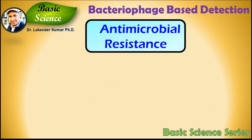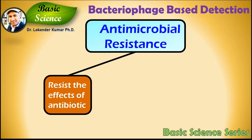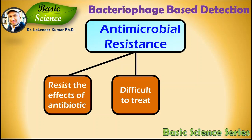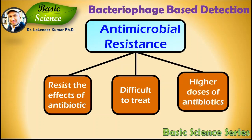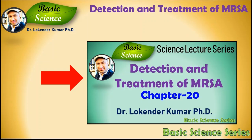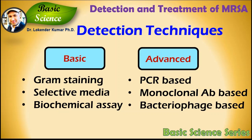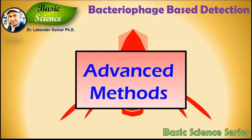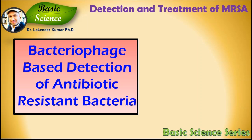Antimicrobial resistance is the ability of a microbe to resist the effect of antibiotics. Resistant microbes are more difficult to treat, requiring alternate medications or higher doses of antimicrobial agents. In my previous episode, chapter 15, I explained antimicrobial resistance and antibiotics in detail. In chapter 20 I explained the method of detection of bacteria using the example of MRSA. The methods mentioned there require more than a day, so advanced methods are required — one important method we discuss today is bacteriophage detection of antibiotic resistant bacteria.